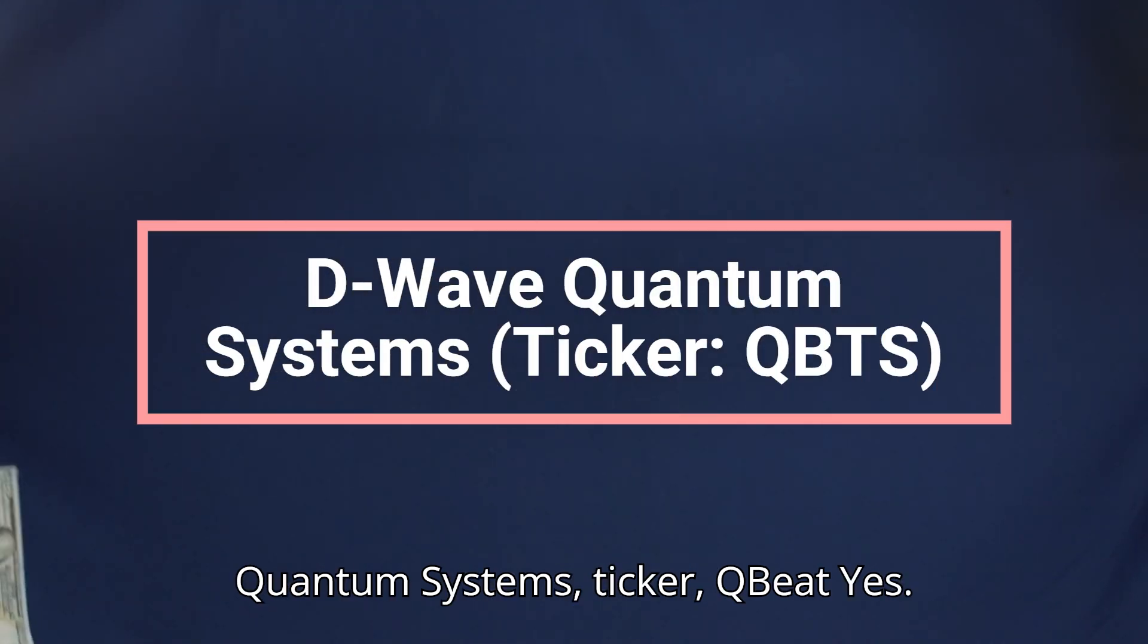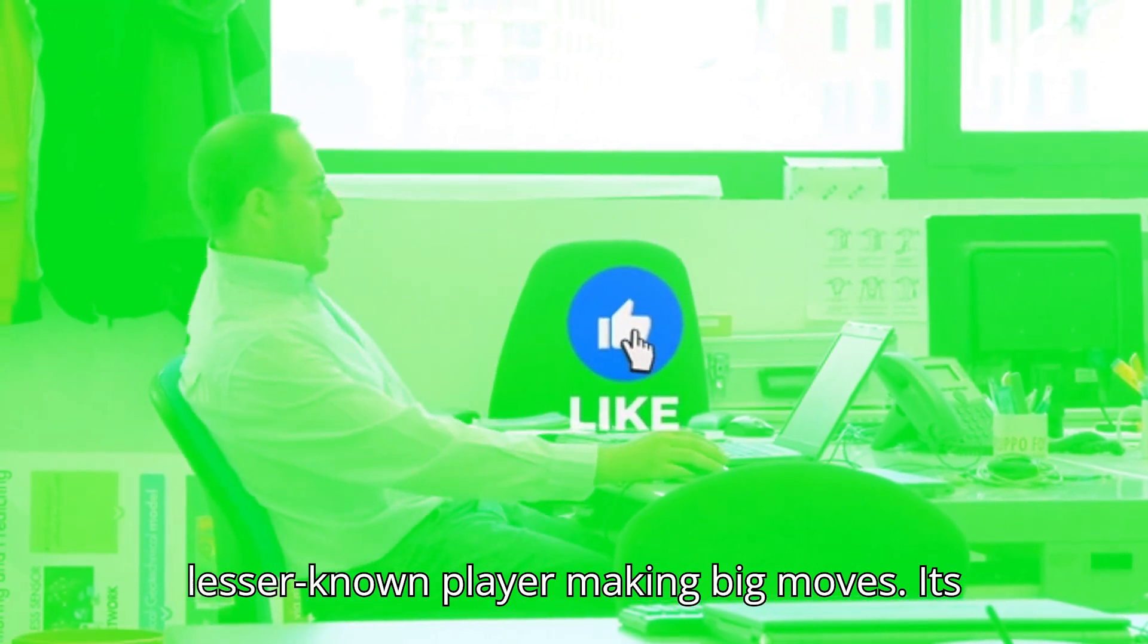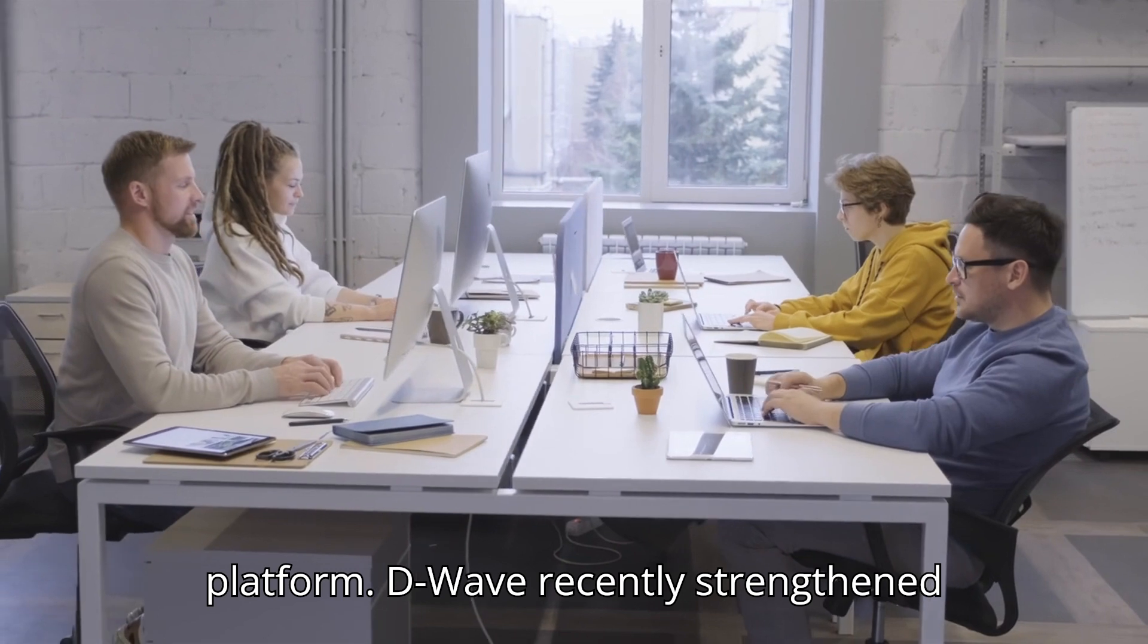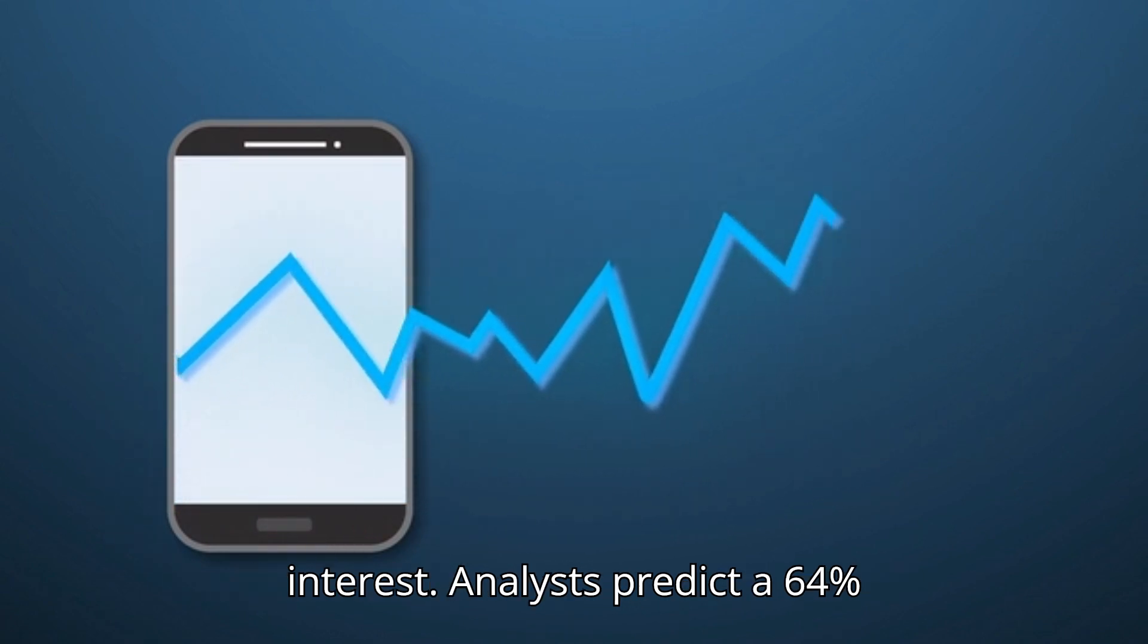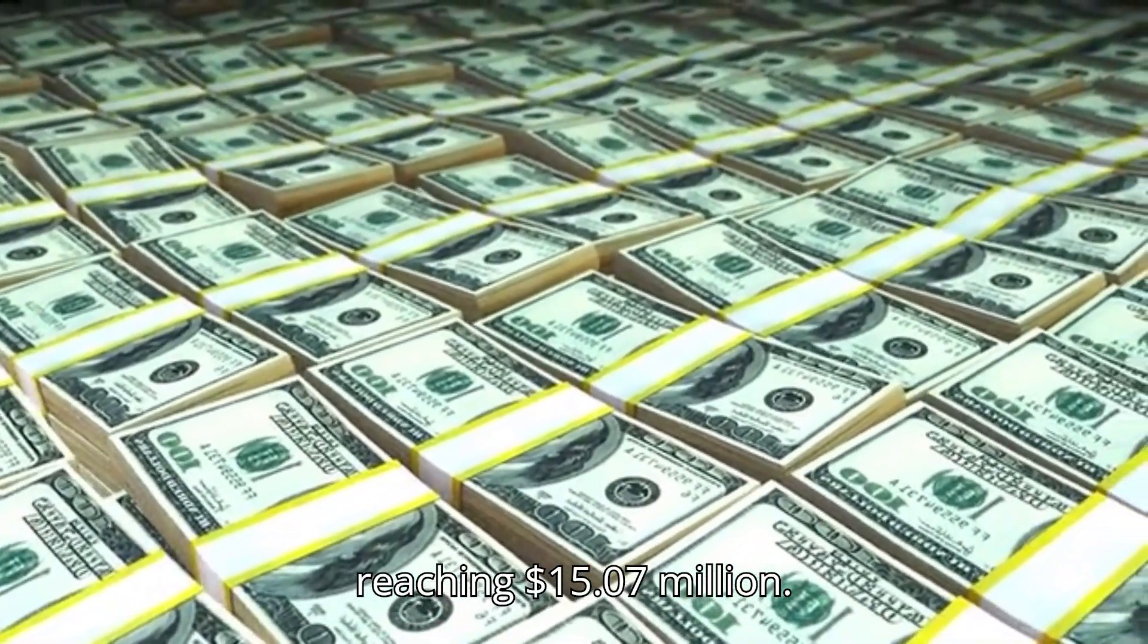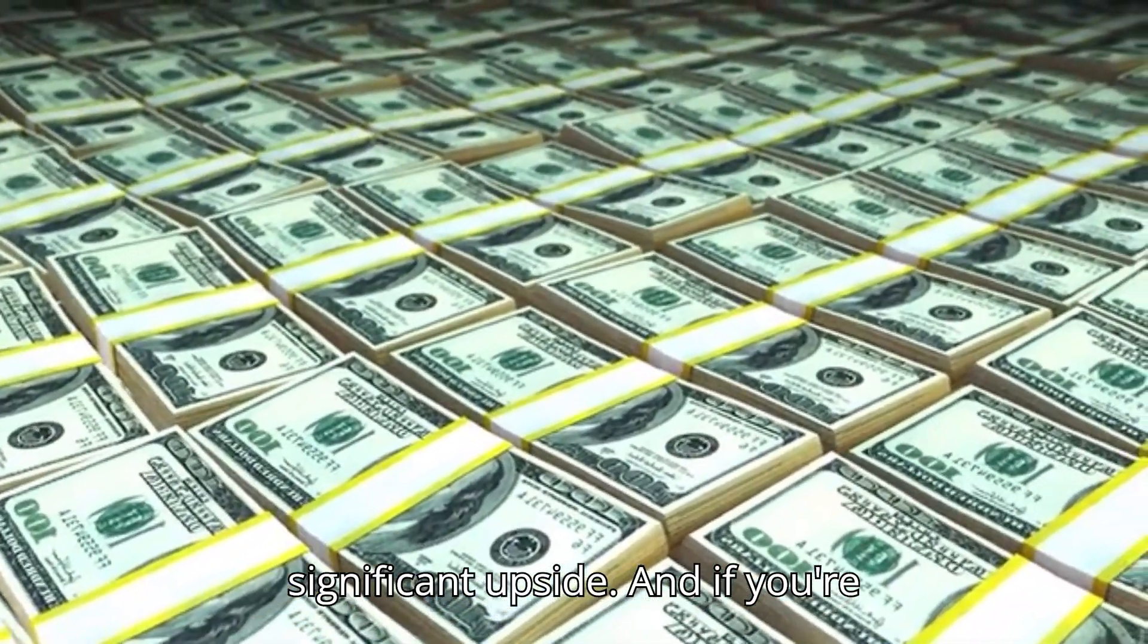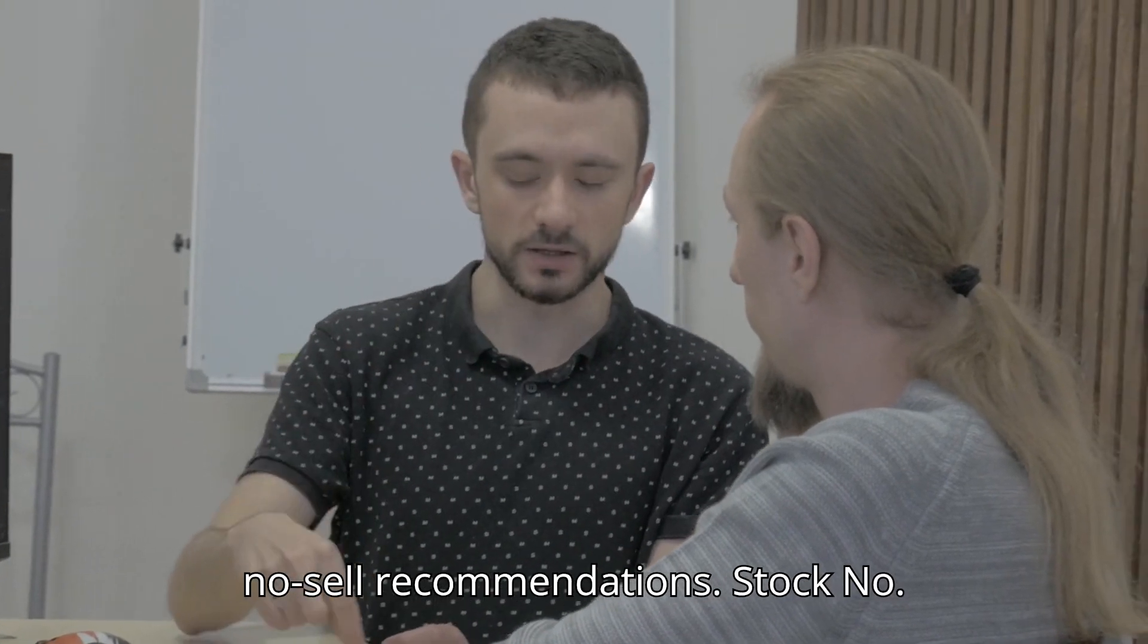Stock number two: D-Wave Quantum Systems, ticker Q-U-B-T. Next, we have D-Wave Quantum Systems, a lesser-known player making big moves. Its stock has gained over 1,000% in 2024, fueled by strong demand for its quantum computing-as-a-service, QCAS platform. D-Wave recently strengthened its balance sheet through recapitalization, reducing financial risks and attracting renewed investor interest. Analysts predict a 64% revenue jump in 2025, reaching $15.07 million. While the company remains unprofitable, its leadership in offering accessible quantum solutions positions it for significant upside. And if you're wondering whether this is all just hype, major Wall Street firms like Benchmark are on board, with 4-buy ratings and no sell recommendations.